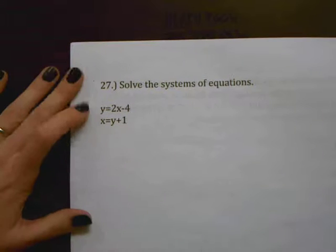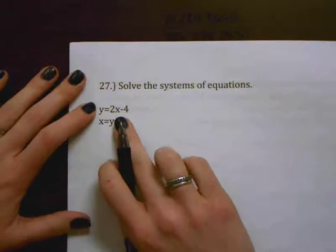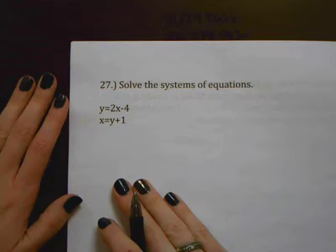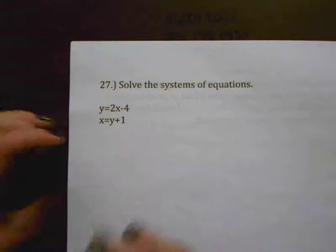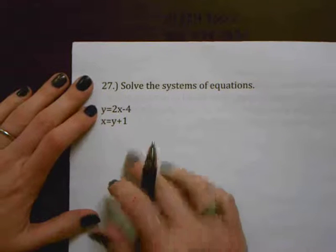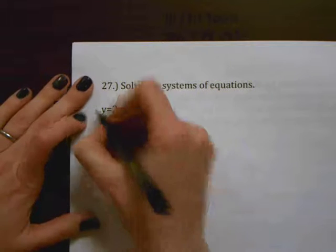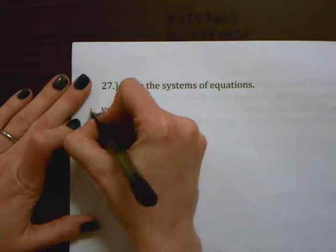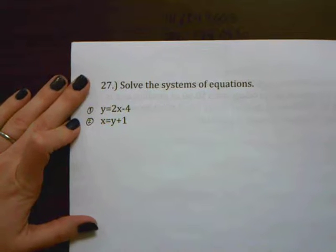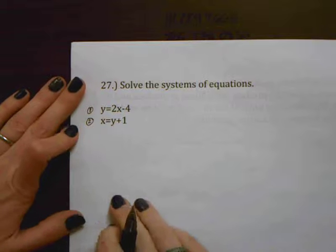What the substitution method does is it gives you a way of rewriting this equation which currently has two unknowns and making it so that you only have one unknown because if I only have one unknown then I can solve the equation. So what we're going to do is we're going to call this equation number one and we're going to call this equation number two just for ease of communication.